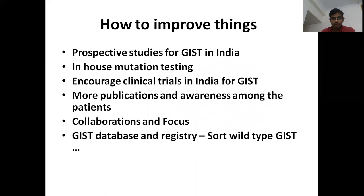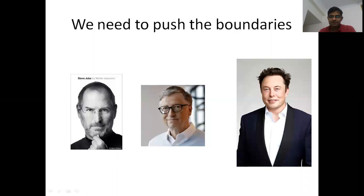There are several things we need to improve in India: the need for prospective studies, quality mutation testing and in-house mutation testing in all institutions, encouraging clinical trials for these rare diseases, more publications, and greater awareness and enthusiasm among doctors. Collaboration and focus are key. We need a GIST database and registry, and we need to resolve the heterogeneous wild-type GIST subtype. If others can push the boundaries, why can't we? Thank you.